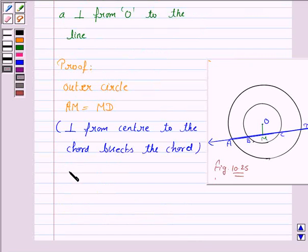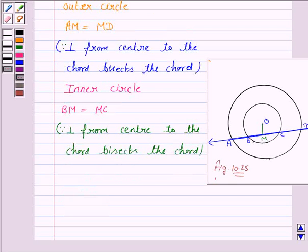Now again for the inner circle, BM is equal to MC because of the same reason, that the perpendicular from the center to the chord bisects the chord. So BM is equal to MC.